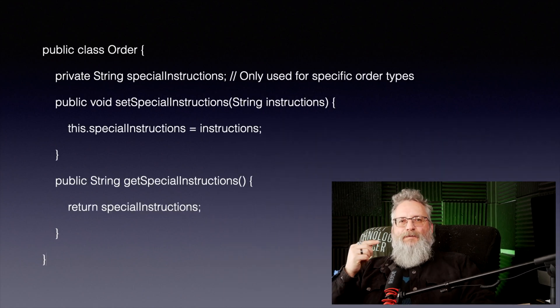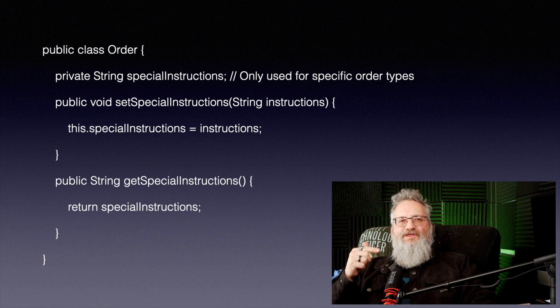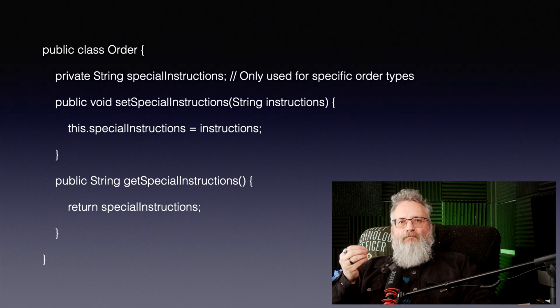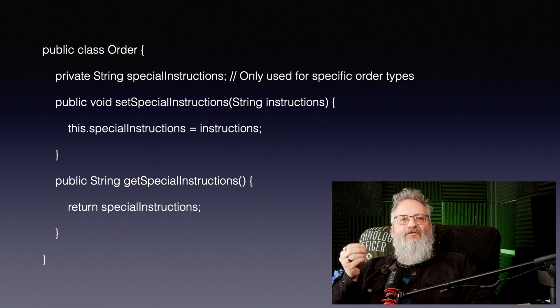A temporary field is a class variable that only gets used in certain conditions or methods. Here's an example. At first glance, this might look fine. But if special instructions only applies to certain order types, why is it there for every order? It bloats the class and confuses other developers who expect it to be relevant everywhere.